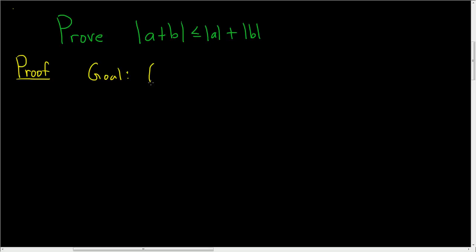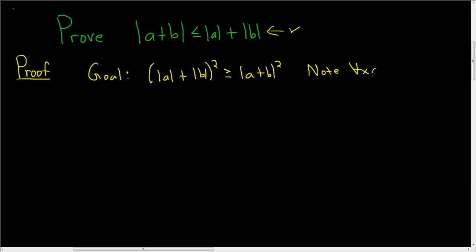The goal is we're going to show that the absolute value of A plus the absolute value of B, squared, is greater than or equal to the absolute value of A plus B, squared. If we can prove this, then we can just take the square root of both sides and we get the above inequality and we're done. One useful fact we're going to use is that for every real number X, the absolute value of X squared is the same as X squared.